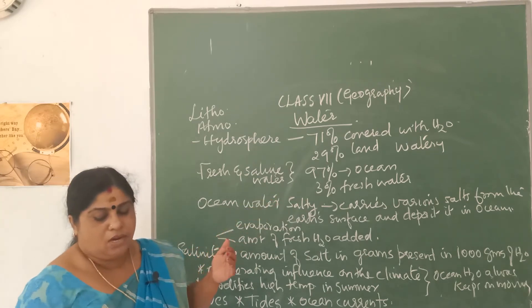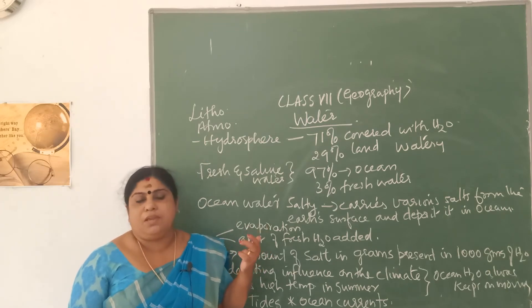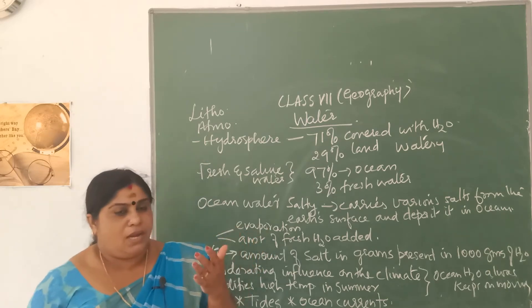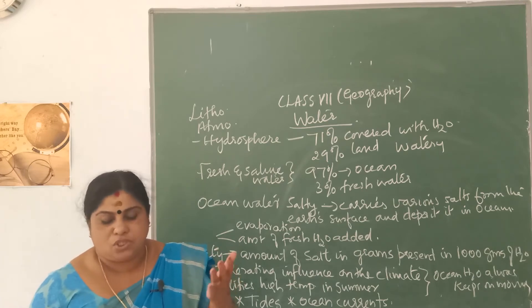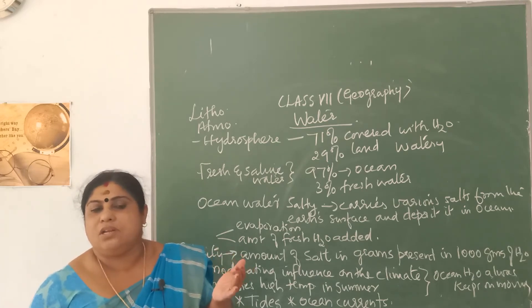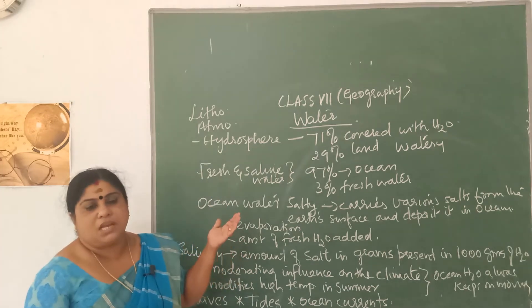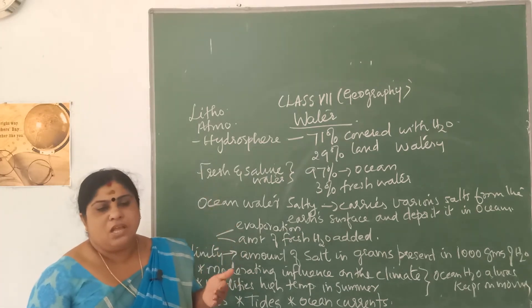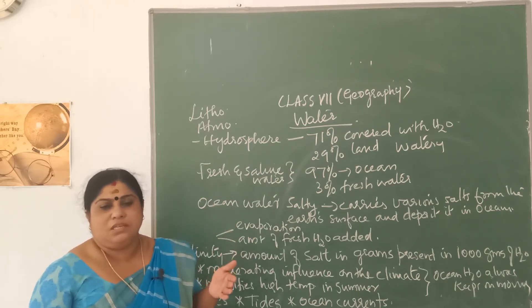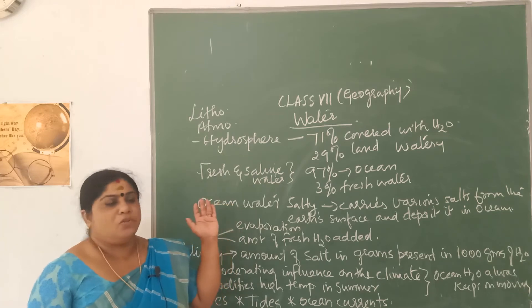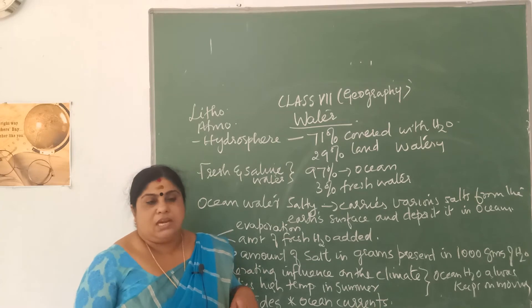Water cycle — already you have learned this. Water cycle is the process by which water continually changes its form and circulates between ocean, atmosphere, and land. Water evaporates from water bodies, rises higher up in the sky, condenses, and falls down as rainfall. This water then flows back to oceans and seas, and again the same process continues. This cyclical process is called the water cycle.